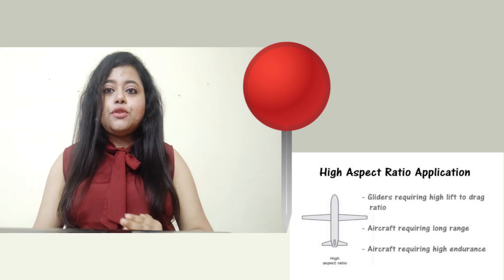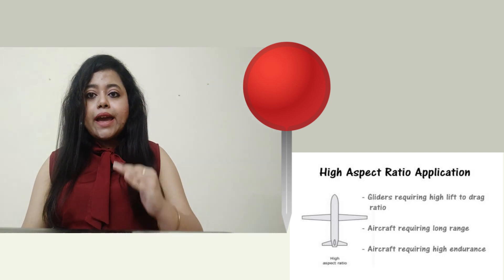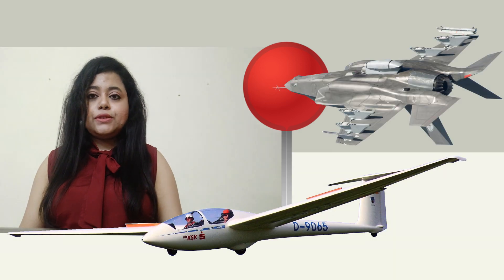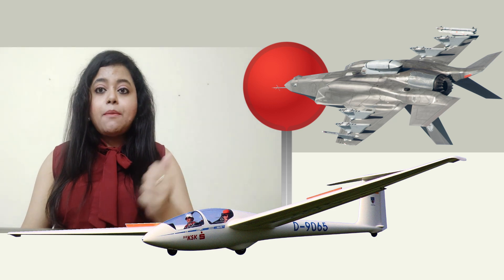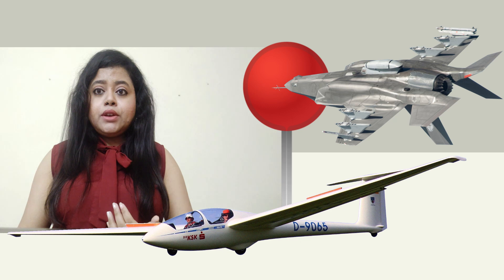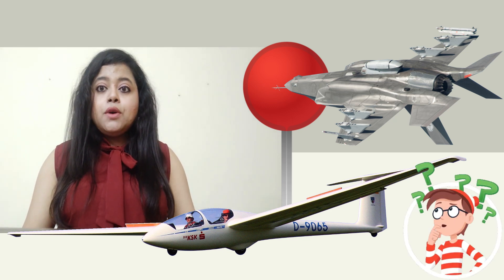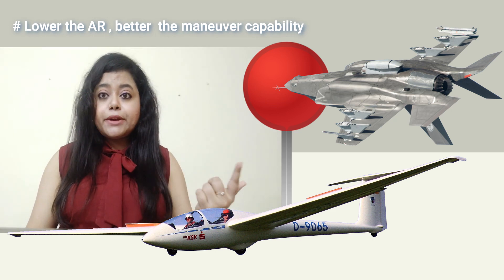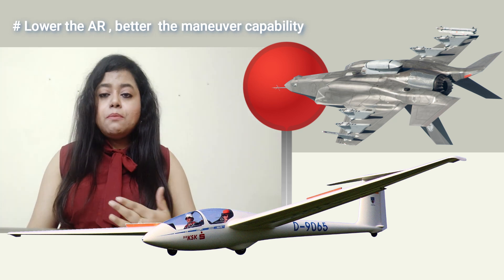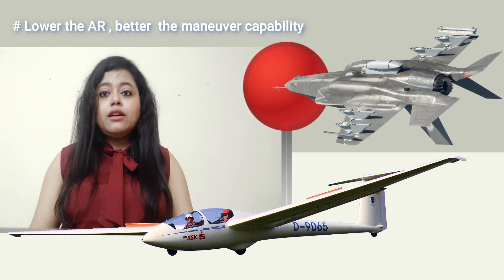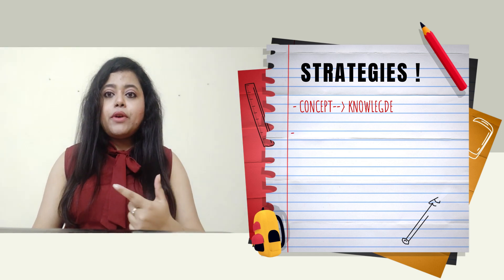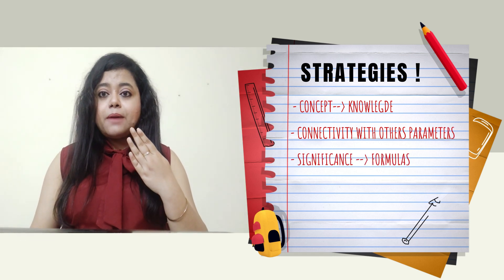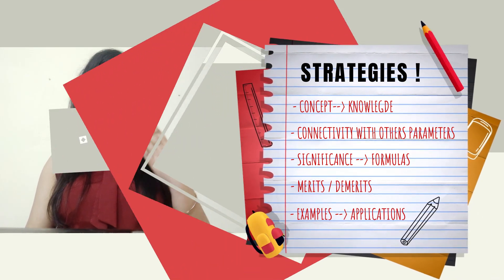For example, consider aspect ratio, which varies across types of aircraft. Take a glider and a fighter aircraft. A question might ask which aircraft is more maneuverable. You can connect aspect ratio with maneuverability: the lesser the aspect ratio, the better the aircraft's maneuverability. Gliders have a larger aspect ratio compared to fighters, so fighters are more maneuverable. Prepare your notes with concept, connectivity, advantages, disadvantages, examples, formulas, and applications.